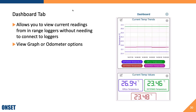The third tab in HOBO Connect is the Dashboard tab, which allows you to view current readings from in-range loggers without needing to connect to those loggers. You have two options for how to view each channel: the graph option lets you monitor changing conditions over time, or you can choose to view the current condition using the odometer option.